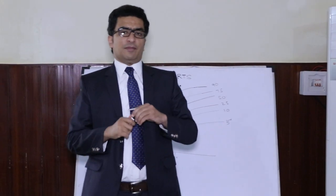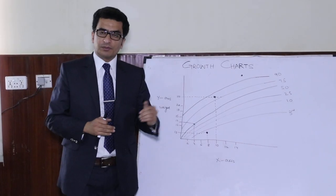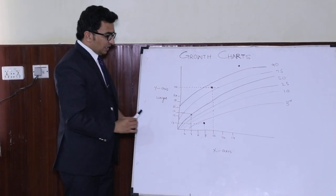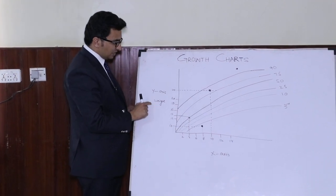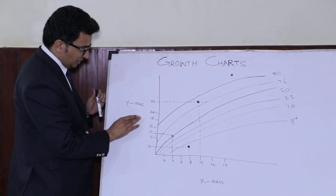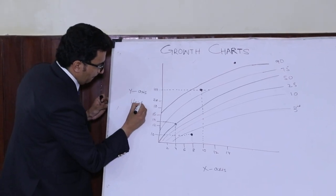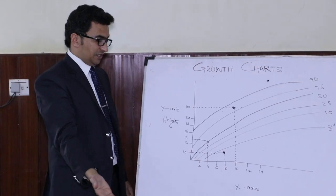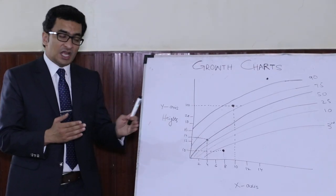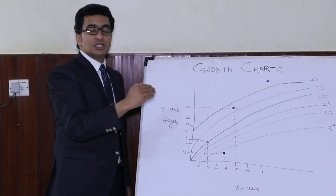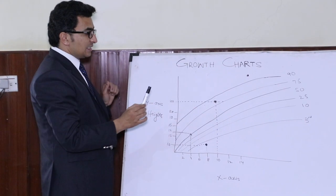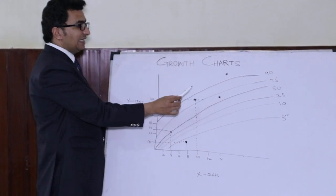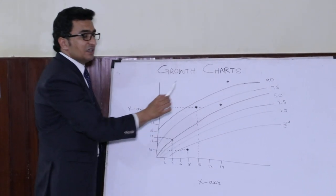If your examiner asks you to plot the height of a patient, a similar growth chart for height will be used, in which the age will already be on the x-axis and on the y-axis, instead of weight, different heights will be written. You put the dots in the same fashion as for weight and see at which centile the height lies. If the height falls between two centile lines, for example between the 50th and 75th centile, you will state that.